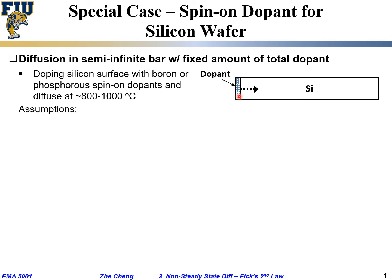To mathematically describe this process, we need assumptions. First, we assume D, the diffusion coefficient, is constant for simplicity. This is also correct in practice because the dopant concentrations we're dealing with are still low in silicon.